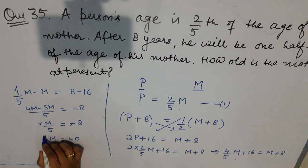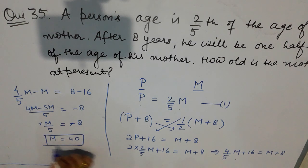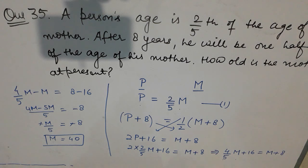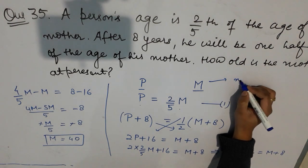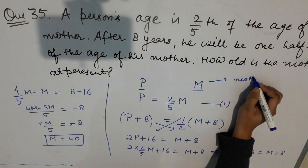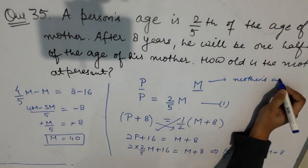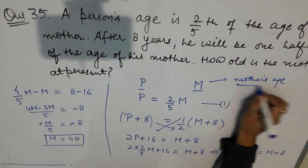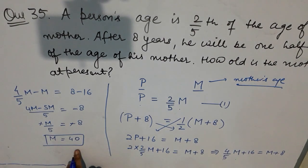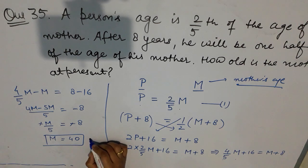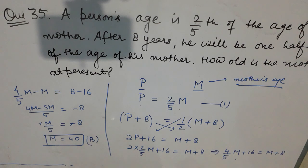The negatives cancel, giving M = 40. That was the mother's age, so the answer is 40, which is option B in the question.